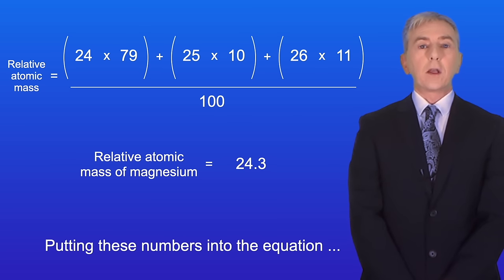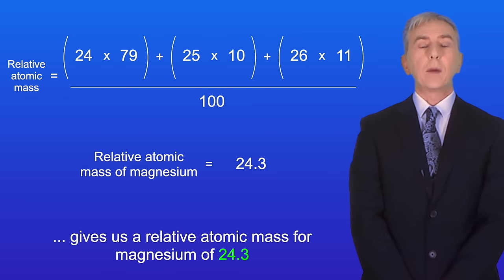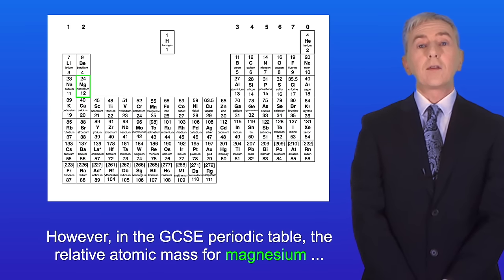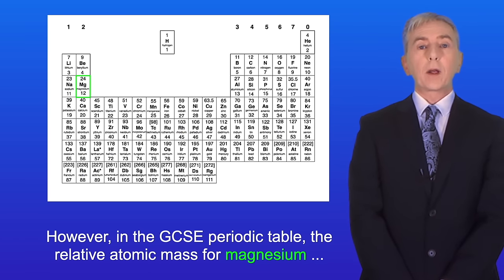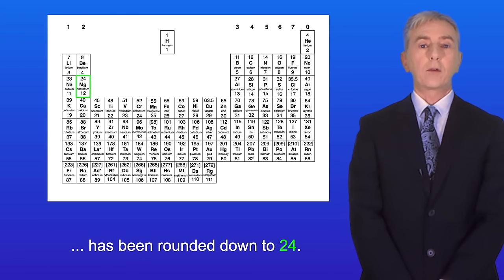Okay, putting these numbers into the equation gives us a relative atomic mass for magnesium of 24.3. However, in the GCSE periodic table the relative atomic mass for magnesium has been rounded down to 24.